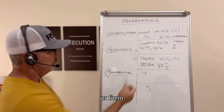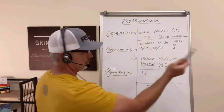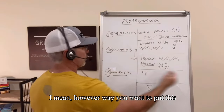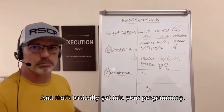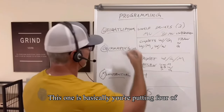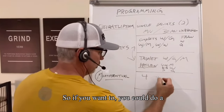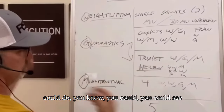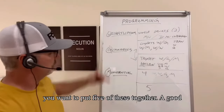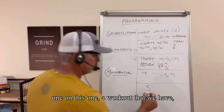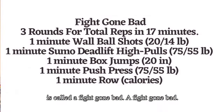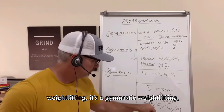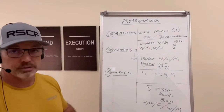For a triplet, you can do all monostructural if you want, all weightlifting, or weightlifting-monostructural-monostructural — however way you want to put it together. They also have four and five. For four, you're putting four of these together — for example, weightlifting, weightlifting, gymnastic, and monostructural. For five, a workout called Fight Gone Bad puts five together: weightlifting, weightlifting, gymnastics, weightlifting, and monostructural. That's a pretty tough one if you want to look that up.